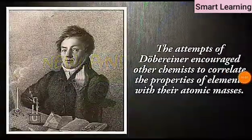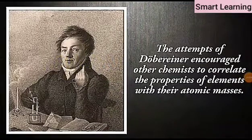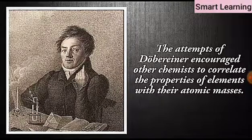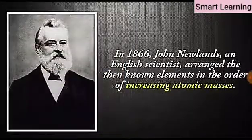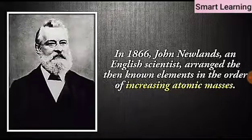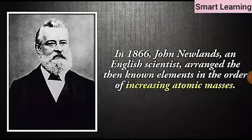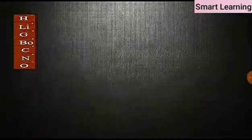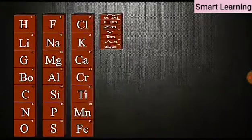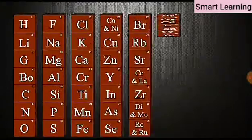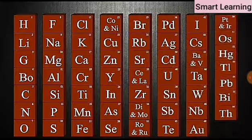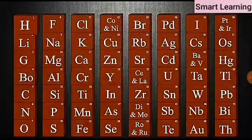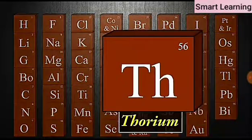The attempts of Dobereiner encouraged other chemists to correlate the properties of elements with their atomic masses. In 1866, John Newlands, an English scientist, arranged the then known elements in the order of increasing atomic masses. He started with the element having the lowest atomic mass, hydrogen, and ended at thorium which was the 56th element.